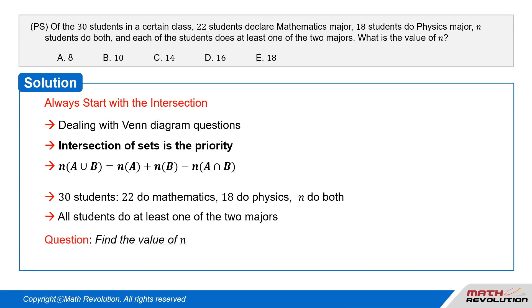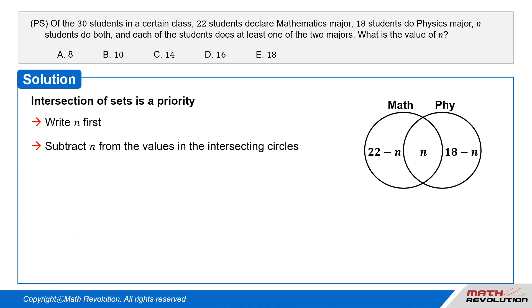We are required to find the value of n. So, let us convert this information into a Venn diagram. Since the intersection of sets is a priority, we must start by writing n in the intersection of the two sets, mathematics set and physics set.